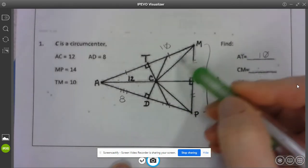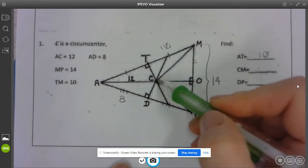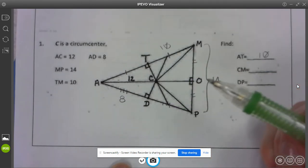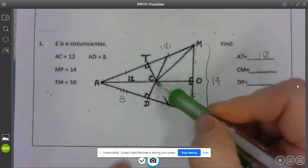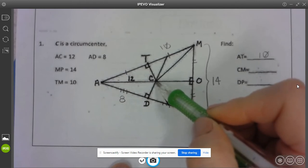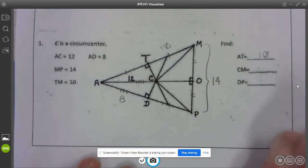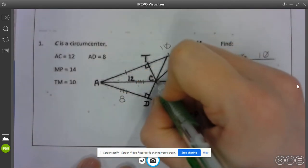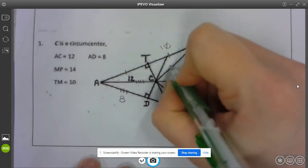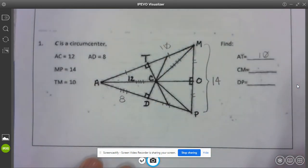CM, CM here. Now with our circumcenter the circumcenter to the vertices are all congruent. So I can put four tick marks there.